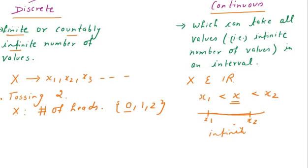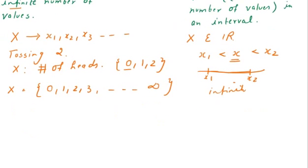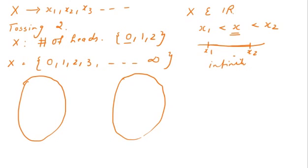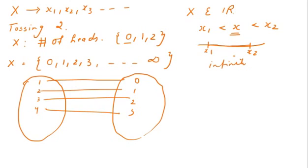The meaning of 'countably infinite' is: if X is taking values 0, 1, 2, 3, and this goes to infinity, then X has infinitely many values, but we can map these values with the set of natural numbers — 1, 2, 3, 4, … — to X values 0, 1, 2, 3, and so on. Because we can do this mapping, we call it countably infinite, and it is still a discrete random variable.